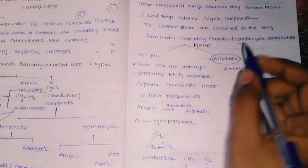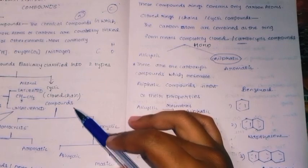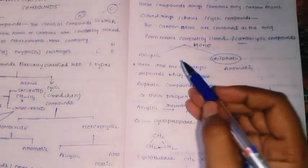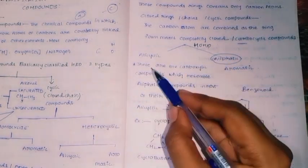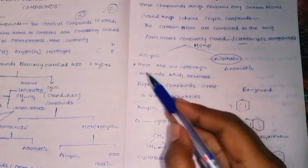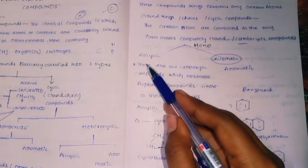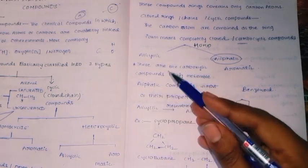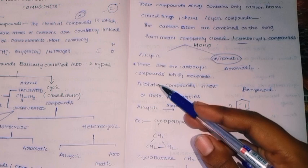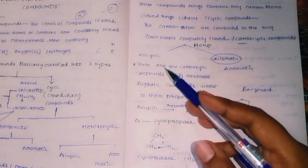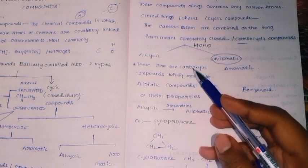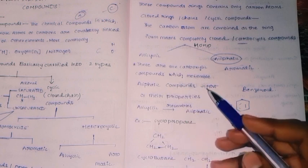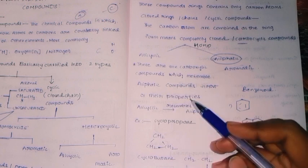Carbocyclic closed-chain compounds under homo are the same. Alicyclic compounds are similar to aliphatic compounds — they are carbocyclic compounds which resemble aliphatic compounds in most of their properties.